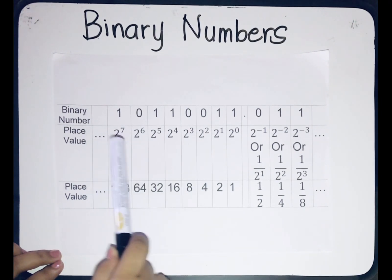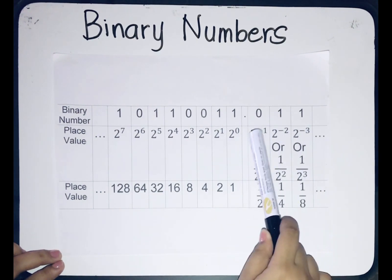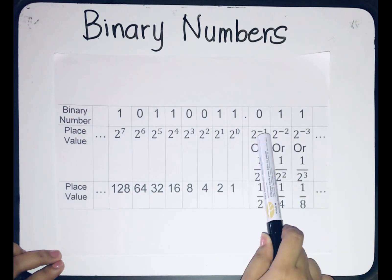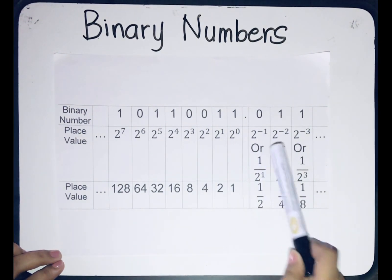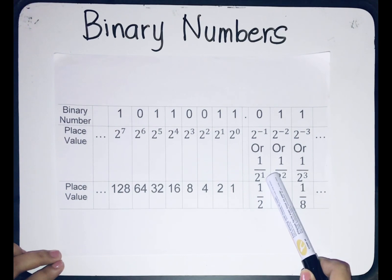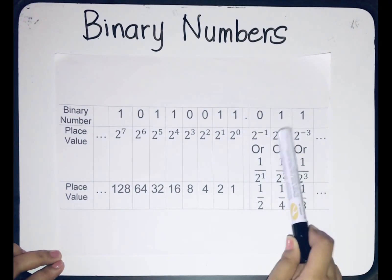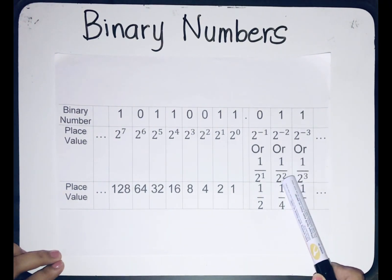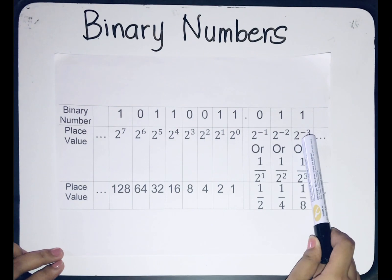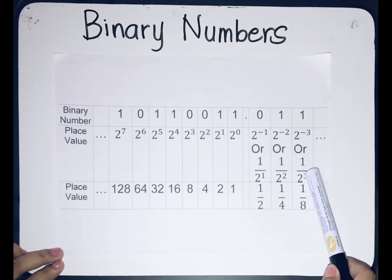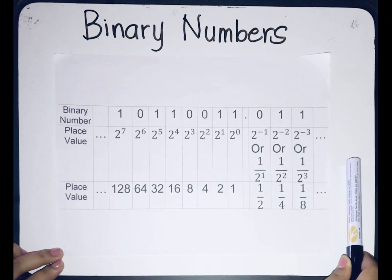From the point to the right, the place value starts with 2 raised to negative 1, or 1 over 2 raised to 1; then 2 raised to negative 2, or 1 over 2 raised to 2; then 2 raised to negative 3, or 1 over 2 raised to 3, and so on.